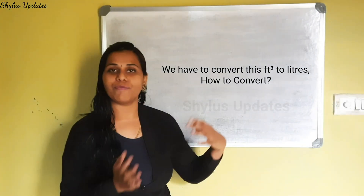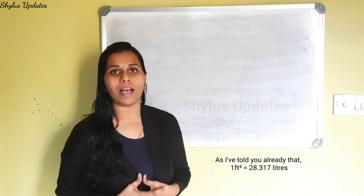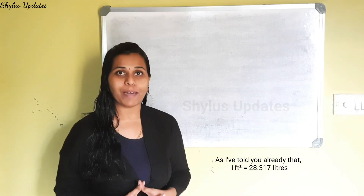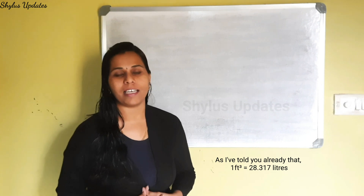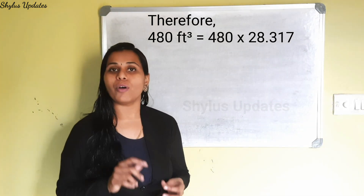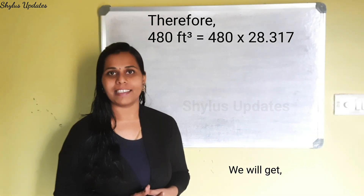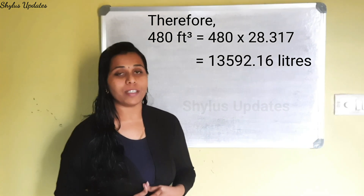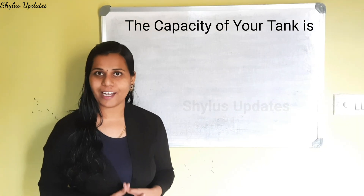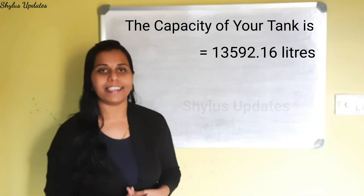We have to convert this feet cube to liters. As I have told you already, 1 feet cube is equal to 28.317 liters. Therefore, 480 feet cube is equal to 480 into 28.317. You will get 13,592.16 liters. That is the capacity of your tank — 13,592.16 liters.